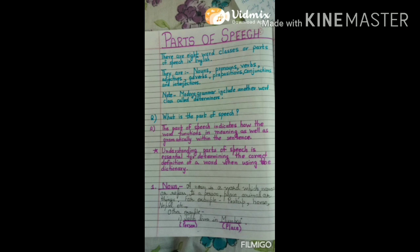They are noun, pronoun, verb, adjective, adverb, preposition, conjunction and interjection. Note: the point to be noted is modern grammar also includes another word class called determiners. Basically, we learn 8 parts of speech but in modern grammar we are also including determiners these days.